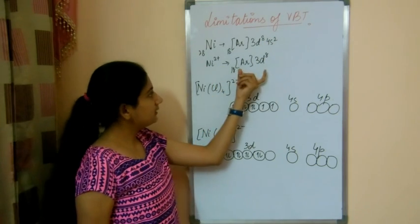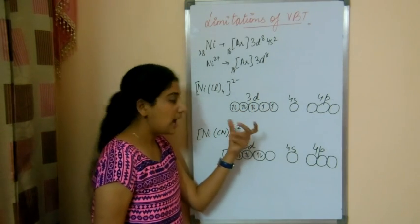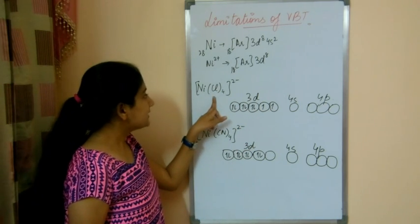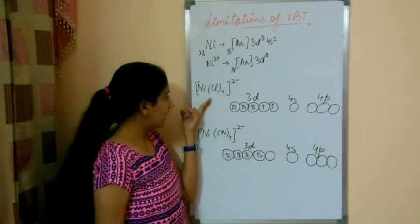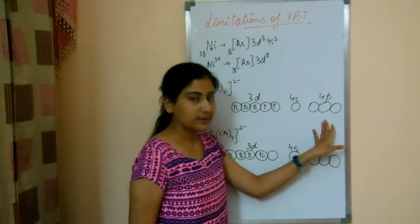Now if we represent this diagrammatically, we will see that 8 electrons are present in 3d orbital. Now see chloride ions are here. Chloride ions are going to overlap with these empty orbitals.